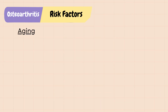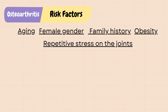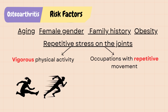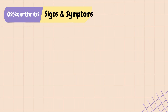Risk factors of OA include aging, female gender, family history, obesity due to excessive weight putting stress on the supporting joints, and repetitive stress on the joints — for example, vigorous physical activity such as jumping or running on hard surfaces, and occupations that require repetitive squatting, kneeling, and lifting.